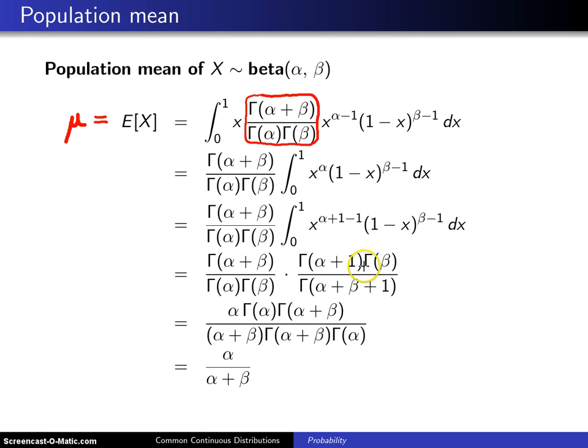Now at this point we can eliminate this gamma of beta and this gamma of beta—they cancel. In addition, one of the properties of the gamma function is gamma of alpha plus 1 can be written as alpha times gamma of alpha